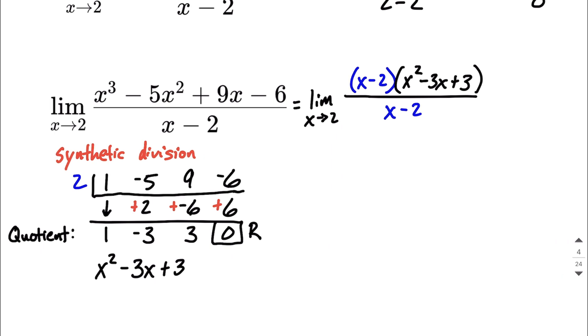What you're going to notice as we look at this, we've done our factoring. So x minus 2 and x minus 2, this common factor, can reduce down to lowest terms. And we're allowed to do that because we're working with a limit in this case. Bring down what remains, the x squared minus 3x plus 3.